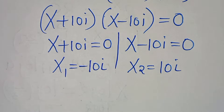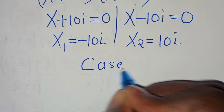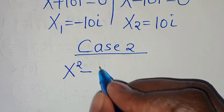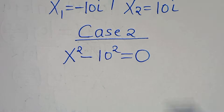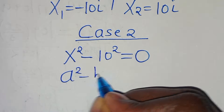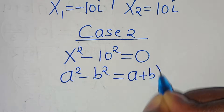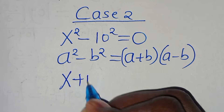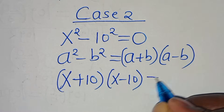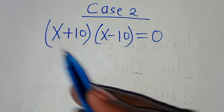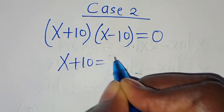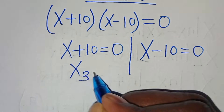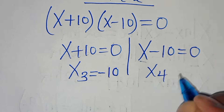Let's proceed to case 2, which is x to the power of 2 minus 10 to the power of 2, this is equal to 0. This equation is of the form a squared minus b squared, which can be expressed as a plus b multiplied by a minus b. So we have x plus 10 multiplied by x minus 10, this is equal to 0. Therefore x₃ is equal to minus 10 and x₄ is equal to 10.